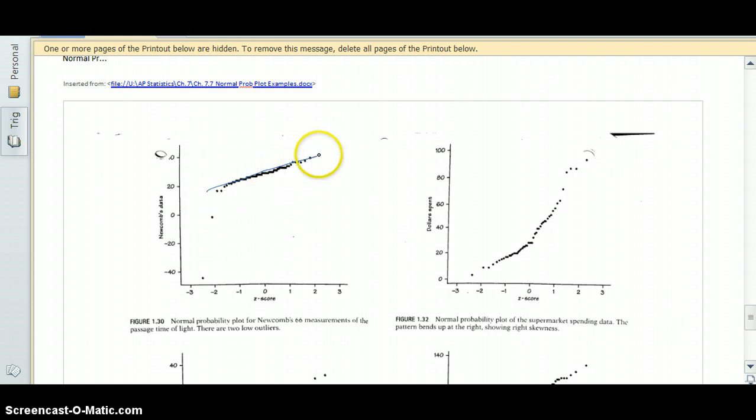So if we look here, this part looks pretty straight, but these two points indicate that there are outliers on the low side because they're so far from the other line. So this normal probability plot is indicating that it might have been normal except we've got some outliers.